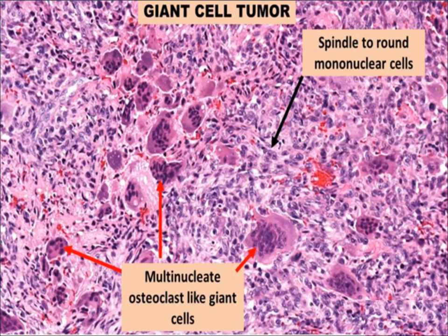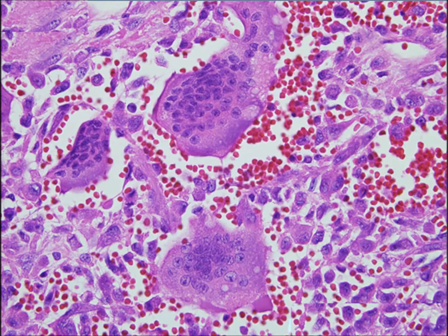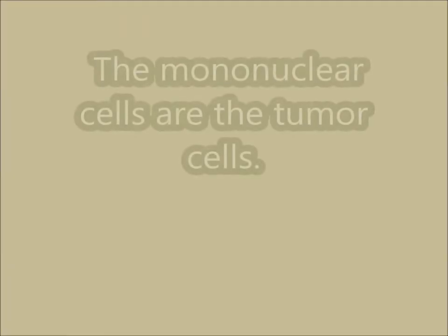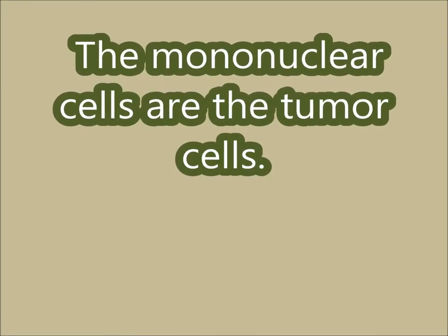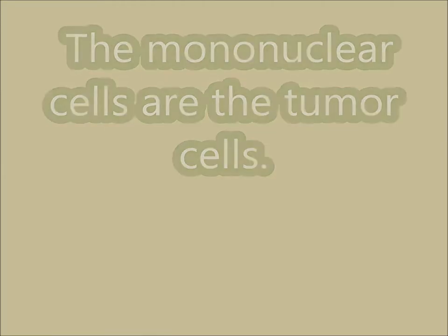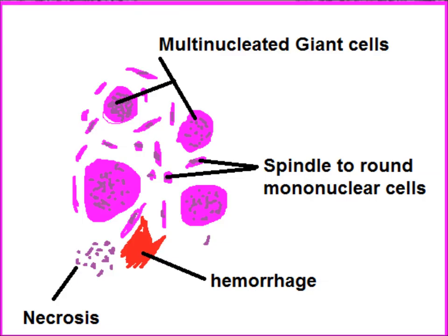Microscopically, the typical features are multinucleated osteoclast-like giant cells and mononuclear round to spindle cells. The mononuclear cells are the true tumor cells. The sketch of the tumor shows multinucleated giant cells, spindle to round mononuclear cells, and areas of hemorrhage and necrosis.